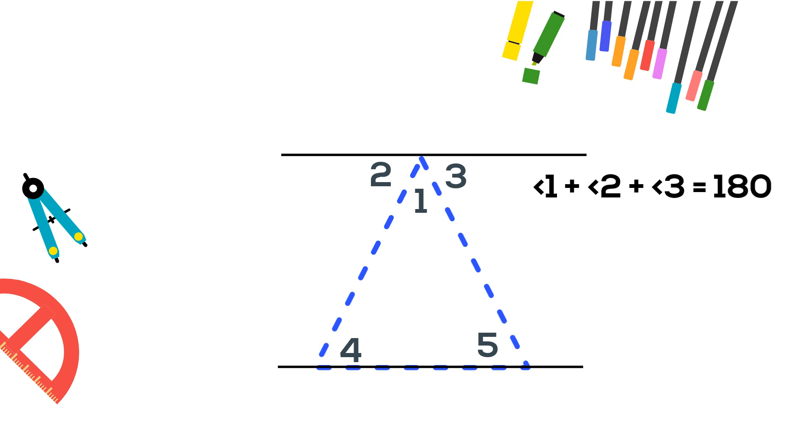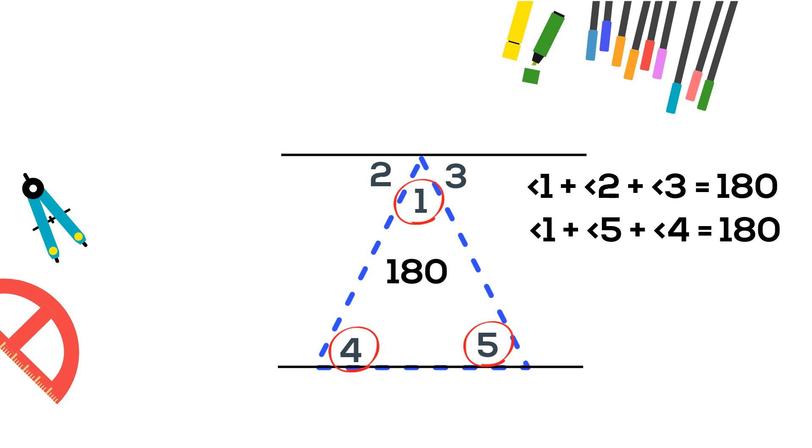Now we know that angles 1, 2, and 3 equals 180 degrees. So we will just substitute in the angles that we already know are equal to angles 2 and 3, and it should also equal 180 degrees.